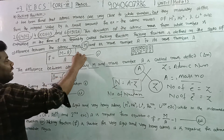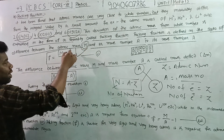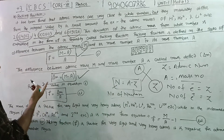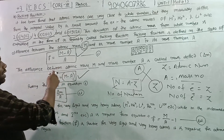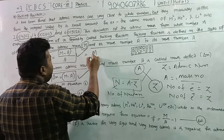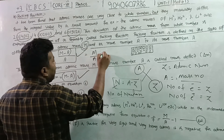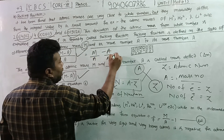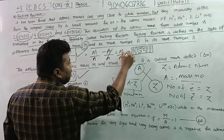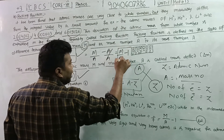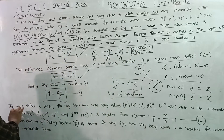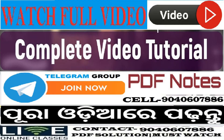Let's write the definition of packing fraction again. F is equal to M minus A by A. We can rewrite this as M by A minus A by A. So F equals M by A minus 1. The mass defect is positive for this variable.